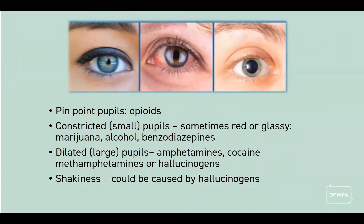Here's an example of what someone's eyes may look like while under the influence of a substance. Pinpoint and small pupils could indicate someone under the influence of depressants. Large pupils could indicate stimulants. It could also mean there is another issue going on — for example, someone with red, glassy eyes could have allergies. A combination of signs and symptoms, when observed consistently, can indicate someone being under the influence of a substance.